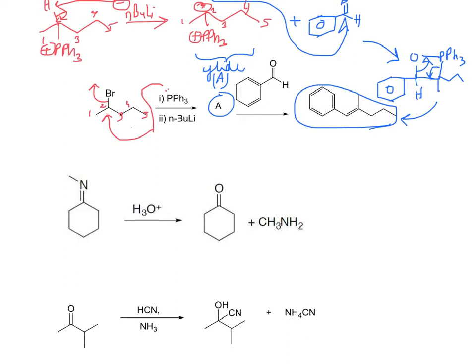Next, we carry out a reaction between an imine and hydronium ion — H3O+. The nitrogen lone pair attacks, water leaves. This is the reversible reaction we discussed: one direction is imine formation, and the backward reaction is what we are doing now. Nitrogen has a positive charge, drawing electrons toward itself, leaving a positive charge on the carbon where water will attack.